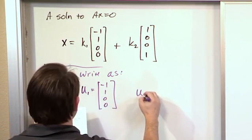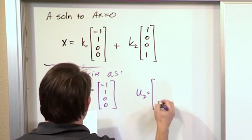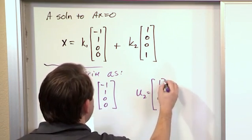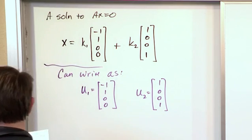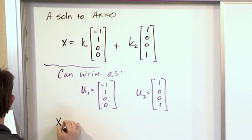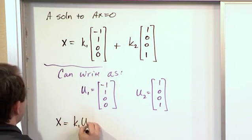And then we can call it U2 = [1, 0, 0, 1]. When we write it like that, the solution to the system is x = K1 times U1 plus K2 times U2.